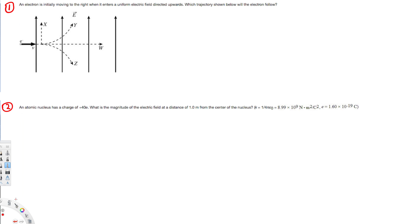What's going on guys, let's do this problem right here. The first question is asking: an electron is initially moving to the right when it enters a uniform electric field directed upwards. Which trajectory shown below will the electron follow? We have trajectory Y and trajectory C, and let's see which one it follows.